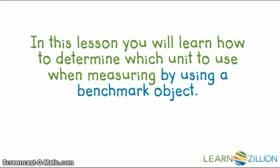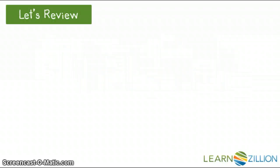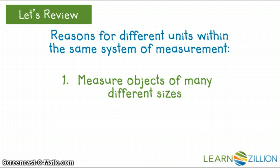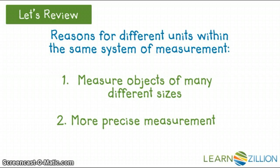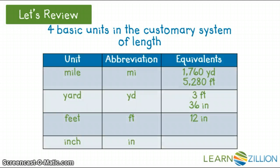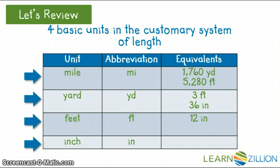In this lesson you will learn how to determine which unit to use when measuring by using a benchmark object. You have learned that each system of measurement contains more than one unit with which to measure. The different units allow us to measure things of many different sizes and it helps to make our measurements more precise or exact. There are four basic units in the customary system of length. A mile is the largest unit and is equivalent to 1,760 yards or 5,280 feet. A yard is smaller than a mile and is equivalent to 3 feet or 36 inches. A foot is smaller than a yard and is equivalent to 12 inches. And the smallest unit is the inch when we're measuring length.